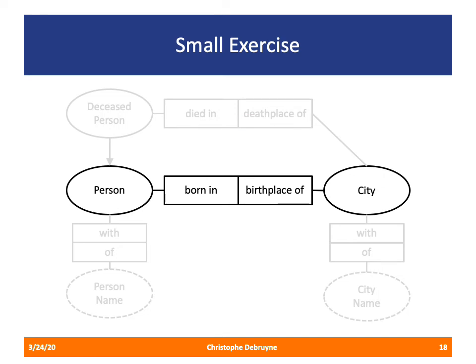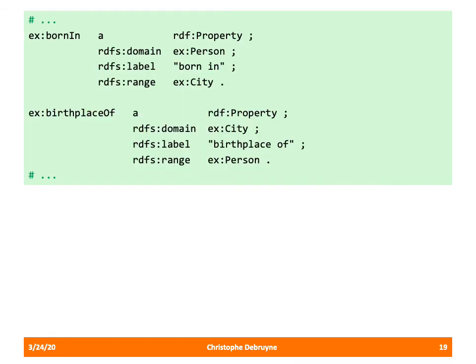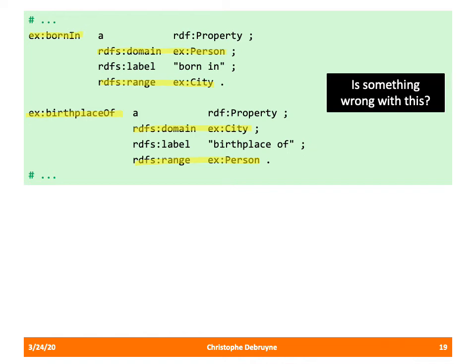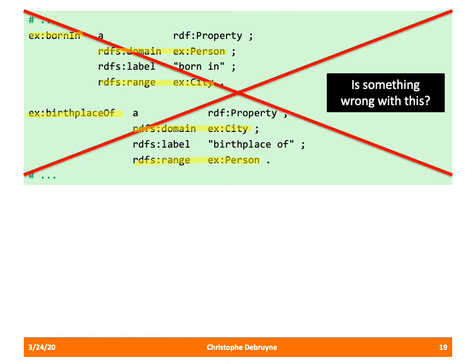Now we implement the relationship between person and city, where we encounter a limitation of RDFS. The relation has two roles resulting in two properties: born_in going from people to cities, and birthplace_of going from cities to people. However, the problem is we've declared two properties that are not related at all, whereas in our conceptual schema they are inverses of one another.